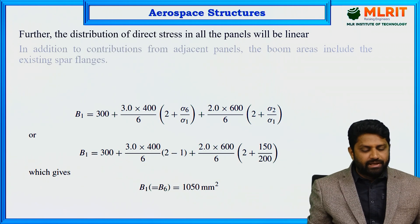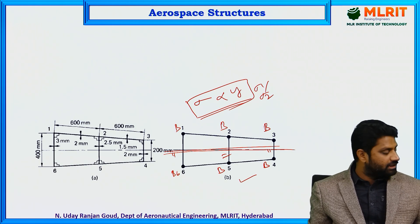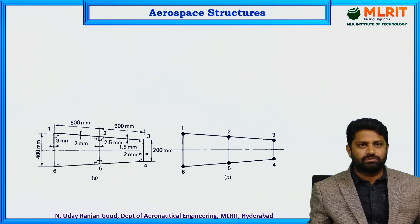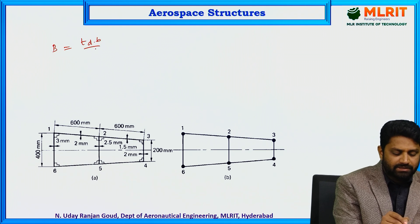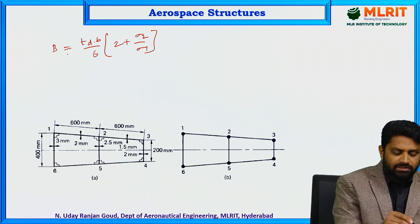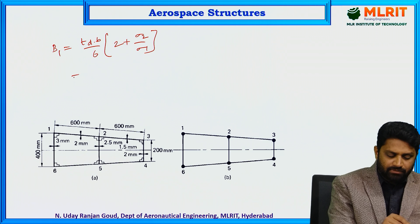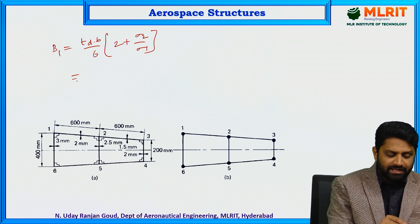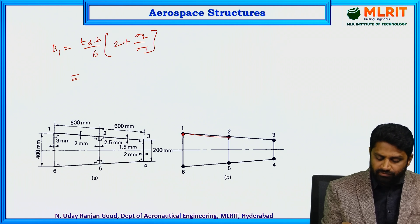Now let us calculate the boom areas. We know the formula: boom area = (t·d·b / 6) × (2 + σ₂/σ₁). Let us calculate for boom 1 first. For boom 1, there are two adjacent panels: panel 1-2 and panel 1-6. We also have one angle section at boom 1 with area 300 mm².